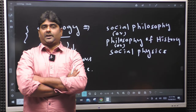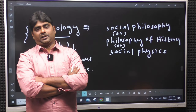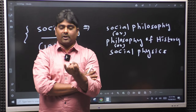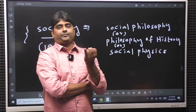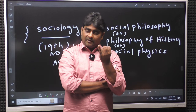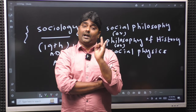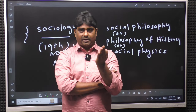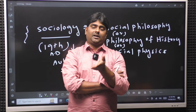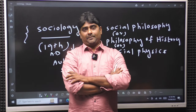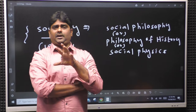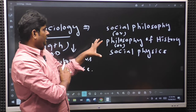Chanakya, also known as Kautilya, was an important thinker. Socrates, Aristotle, and Adam Smith all wrote about the entire society.